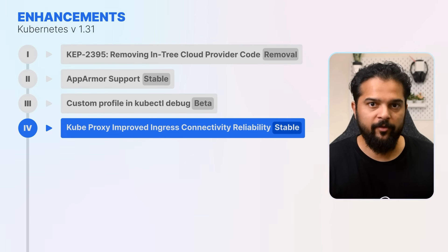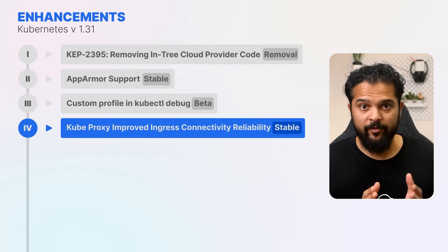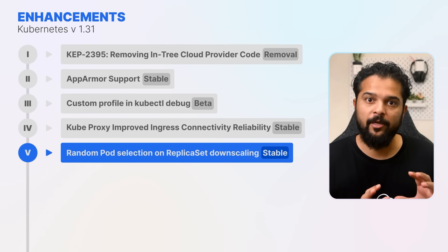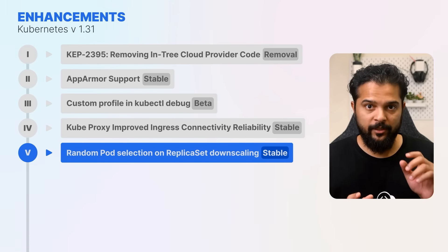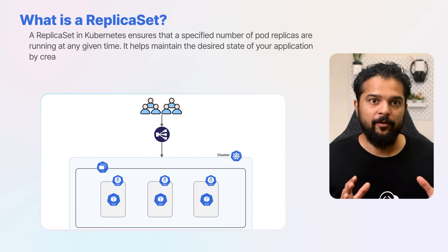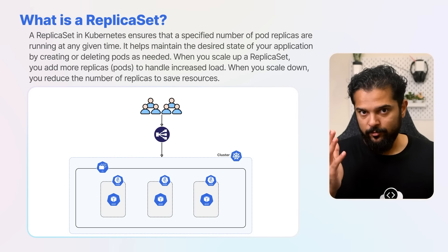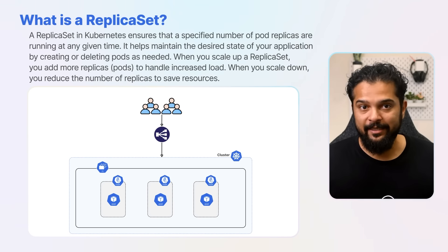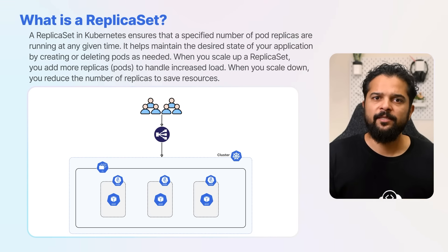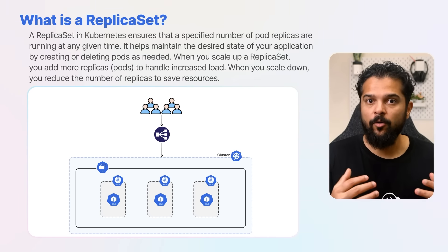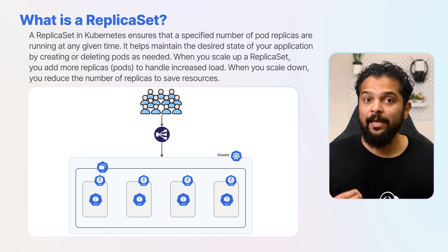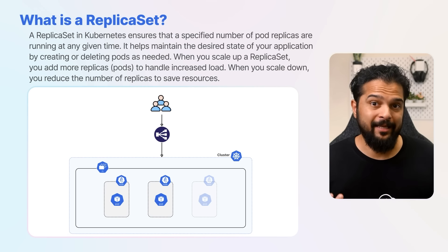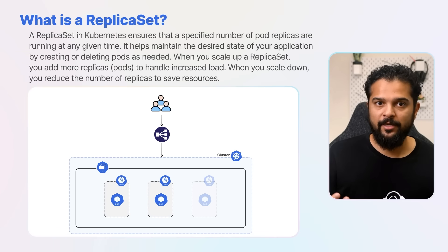In the Kubernetes 1.31 release, a significant quality-of-life improvement has been introduced: a randomized algorithm for pod selection during the downscaling of replica sets, graduating to stable. A replica set in Kubernetes ensures that a specified number of pod replicas are running at any given time. When you scale up a replica set, you add more replicas to handle increased load, and when you scale down, you reduce the number of replicas to save resources.